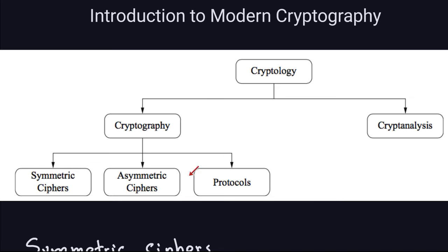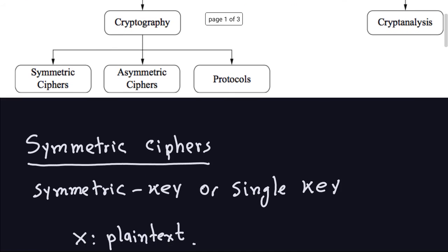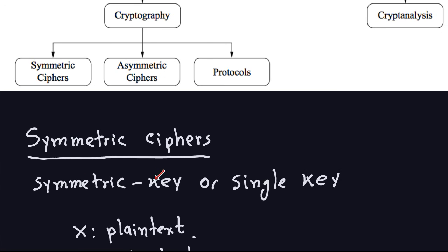We might touch some protocols at the end of this course, but for the most part we are going to concentrate on symmetric and asymmetric ciphers. Symmetric ciphers are also called symmetric key ciphers or single key ciphers. Single key is because encryption and decryption are done with only one key.